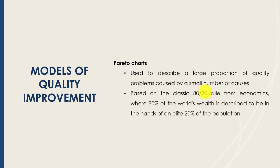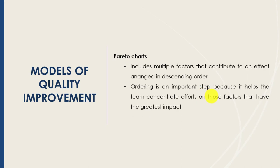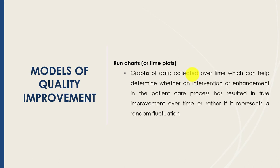When you create a Pareto chart, you include all the multiple factors contributing to an effect, but arrange them in descending order. The ordering is very important because it helps the team concentrate on those few factors that have the greatest impact on quality.